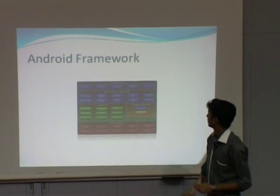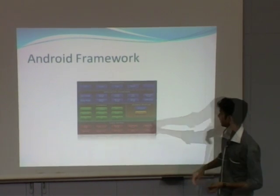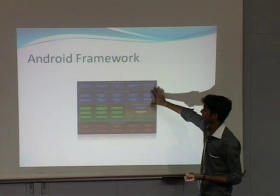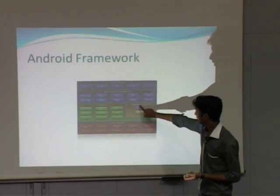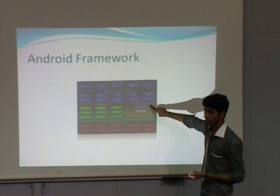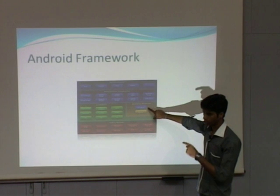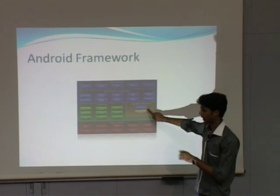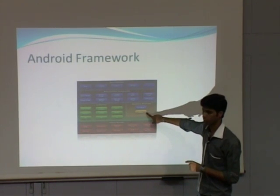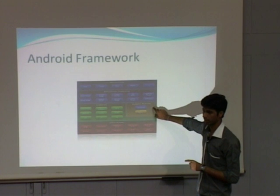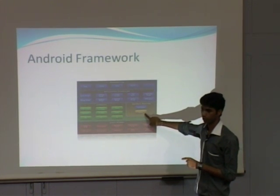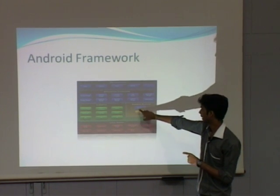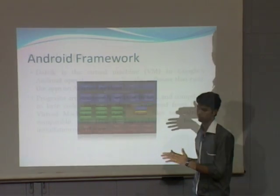I will explain this with a diagram. This is a complete framework of Android, and here we have the Android runtime which is using core libraries of Java and the Dalvik virtual machine. So here comes the difference — earlier we used to have the JVM, the Java virtual machine, running at the bottom of the Java core libraries.